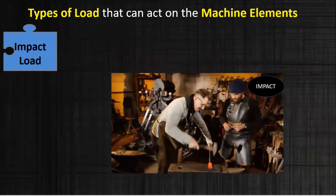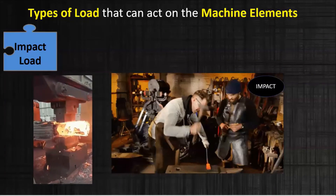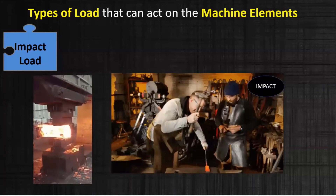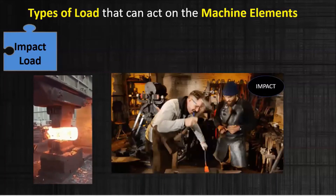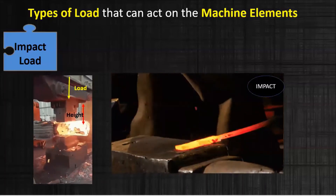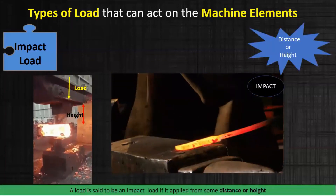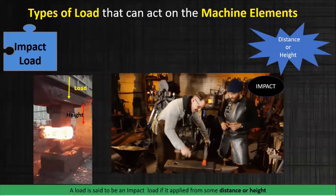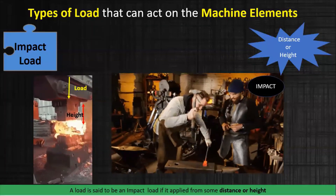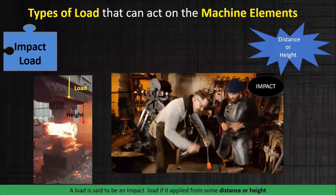Naturally, the shape of the metal will get changed. When he is applying the load from a certain height or a certain distance, its intensity goes on increasing. That load is called an impact load. A load is said to be an impact load if it is applied from a certain distance or height.